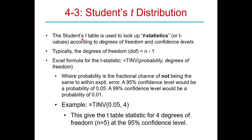The reason it's called 'Student' is that these distributions were first developed by a mathematician who worked for the Guinness Brewing Company. The results were so important that they were published, but the Guinness brewery said he couldn't publish them under his name. So he used the pseudonym 'Student,' which is why this is called the Student's T Distribution.